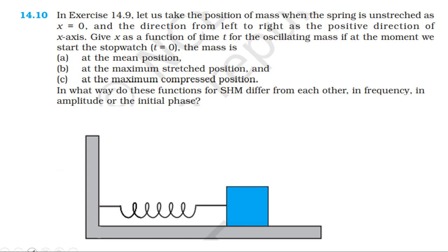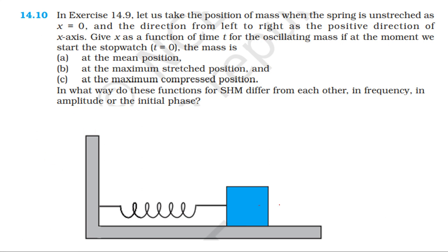In the data for exercise 14.9, the mass of the block is 3 kg, the force constant is 1200 N/m, and the maximum displacement amplitude is 2 cm, that is 2 × 10⁻² m.